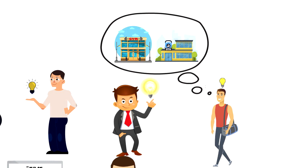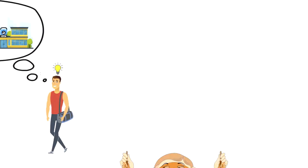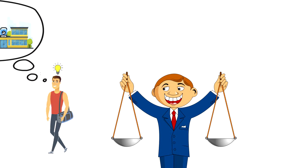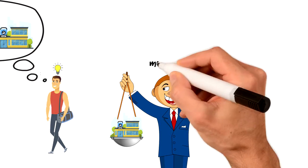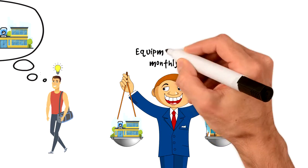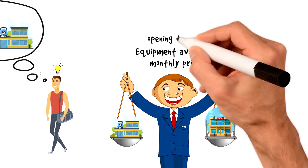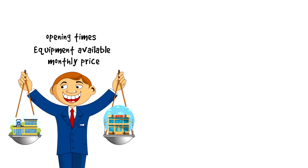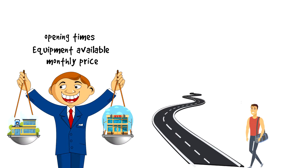You can do that by comparing the options side by side and then making an informed decision. So you have gym A and gym B. You list down the criteria that are important for you. That would be things like monthly price, equipment available, and opening times. Also, the distance to the gym as that will impact how much time you will have to spend to and from the gym.